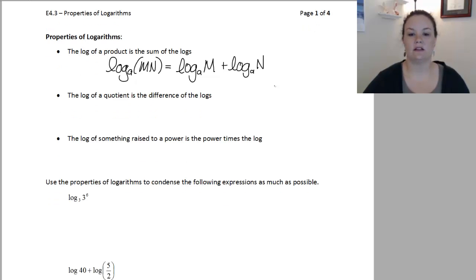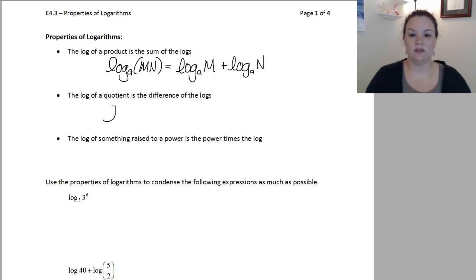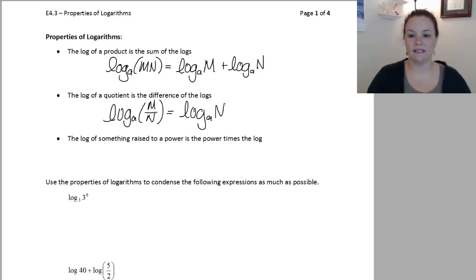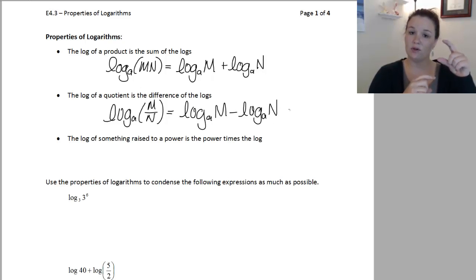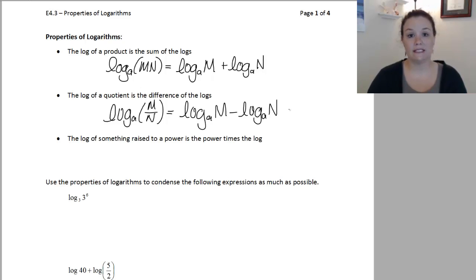The next one is the log of a quotient — quotient means division. The log of a quotient is the difference of the logs. So this means our inside number is a fraction. When we're dividing, this separates into log base A of the top minus log base A of the bottom. So when we're dividing on the inside number, it becomes a subtraction. Notice the one being subtracted is the one that comes from the denominator — the negative term comes from the denominator.